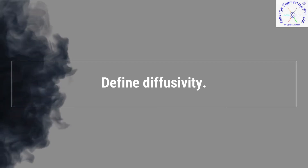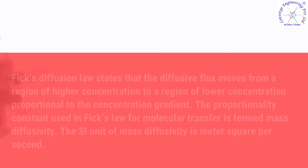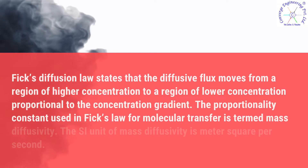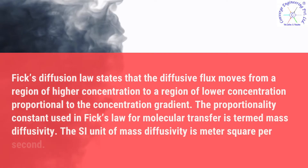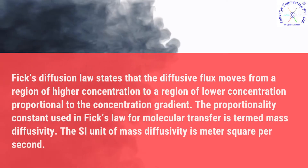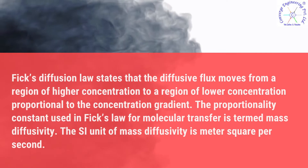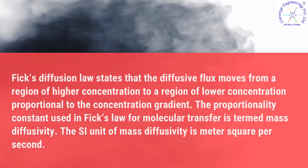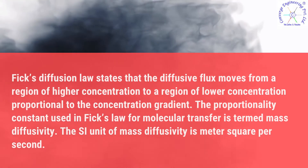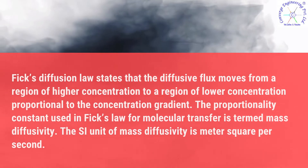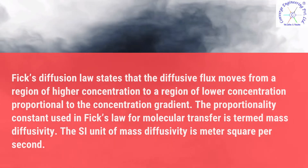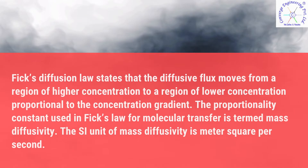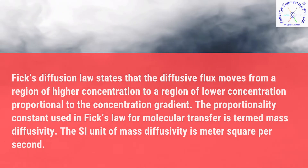Define diffusivity. Fick's diffusion law states that the diffusive flux moves from a region of higher concentration to a region of lower concentration, proportional to the concentration gradient. The proportionality constant used in Fick's law for molecular transfer is termed mass diffusivity. The SI unit of mass diffusivity is meter squared per second.